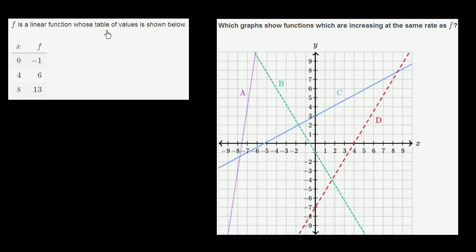F is a linear function whose table of values is shown below. They give us different values of x and what the function is for each of those x's. Which graphs show functions which are increasing at the same rate as f? So what is the rate at which f is increasing?